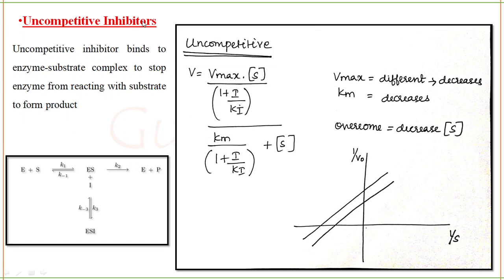Next is uncompetitive inhibition. In uncompetitive inhibition, the inhibitor binds to the enzyme-substrate complex — not to the free enzyme. It binds to the ES complex to stop the enzyme from converting the substrate into product. The equation is: V = Vmax×[S] / ((1 + I/Ki) × Km/(1 + I/Ki) + [S]), which can be written using alpha notation. In this type, both Vmax and Km decrease.